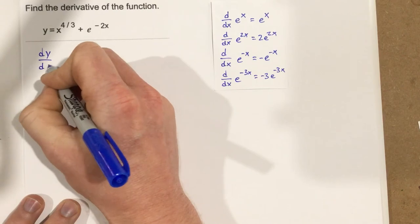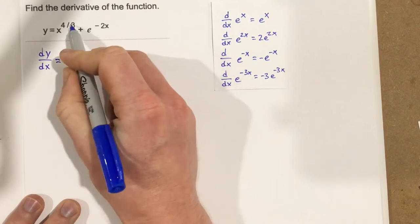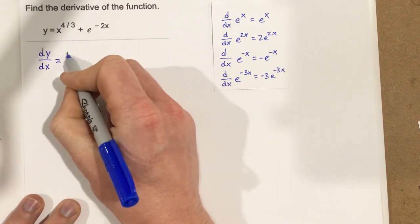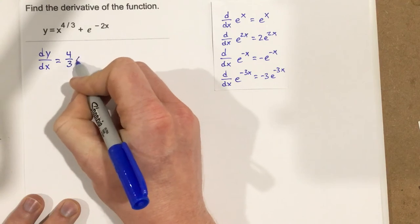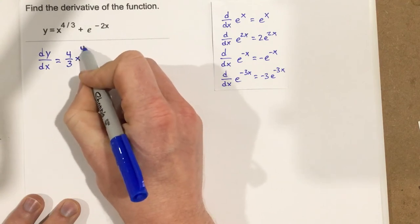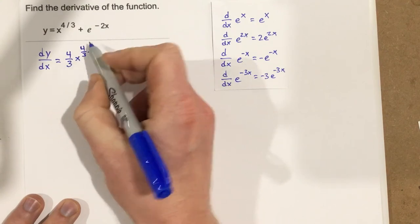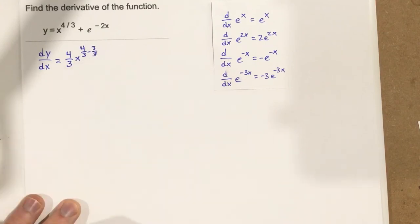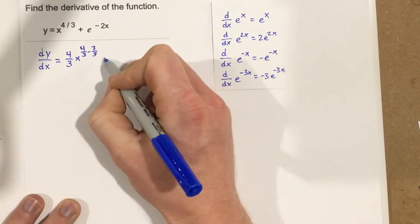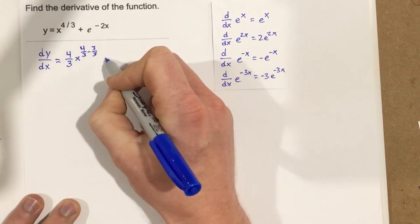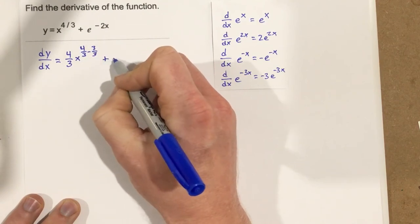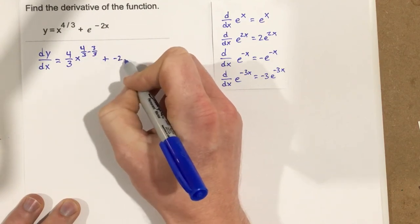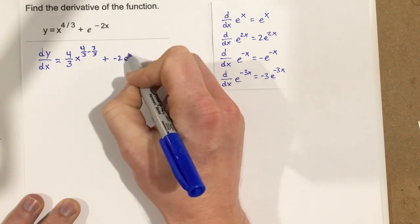dy over dx, and that'll be four-thirds coming to the front. So it's four-thirds x to the four-thirds minus, we've got to subtract one, so that's really just minus three-thirds, and then bring the negative of two out. So we end up with plus negative two e to the negative 2x.